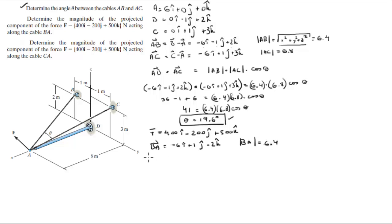There's no need to calculate it. So now we can find univector BA by dividing the vector BA by the magnitude. And that comes out to be 0.9375I plus 0.156J minus 0.3125K. So this is the univector.